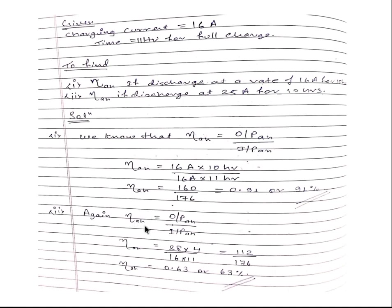For the second case, applying the same formula: ampere-hour efficiency equals output ampere-hours divided by input ampere-hours. Output ampere-hours is 28 multiplied by 4, divided by input of 16 multiplied by 11. After solving, ampere-hour efficiency is equal to 0.63, or 63 percent. Thank you for watching — share and subscribe my channel for more, and keep supporting.